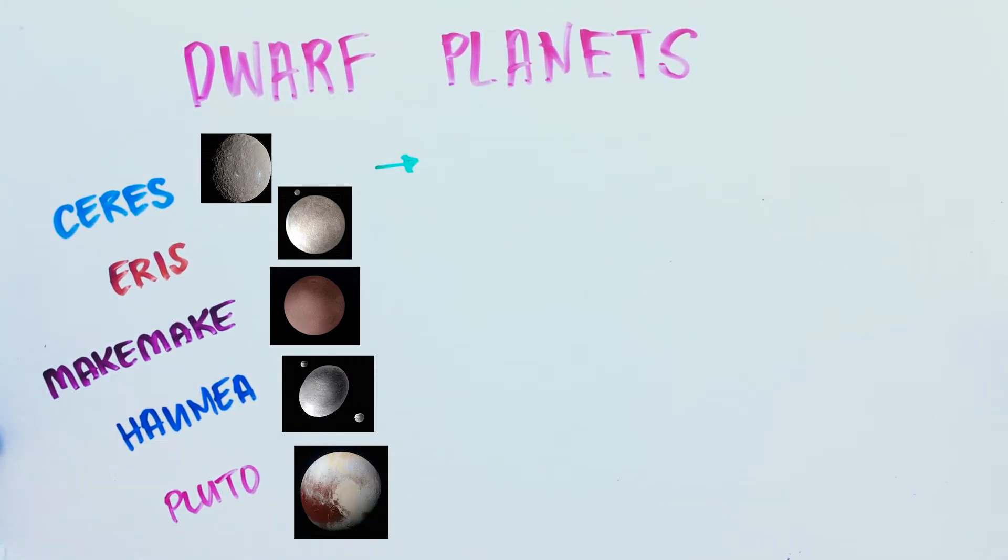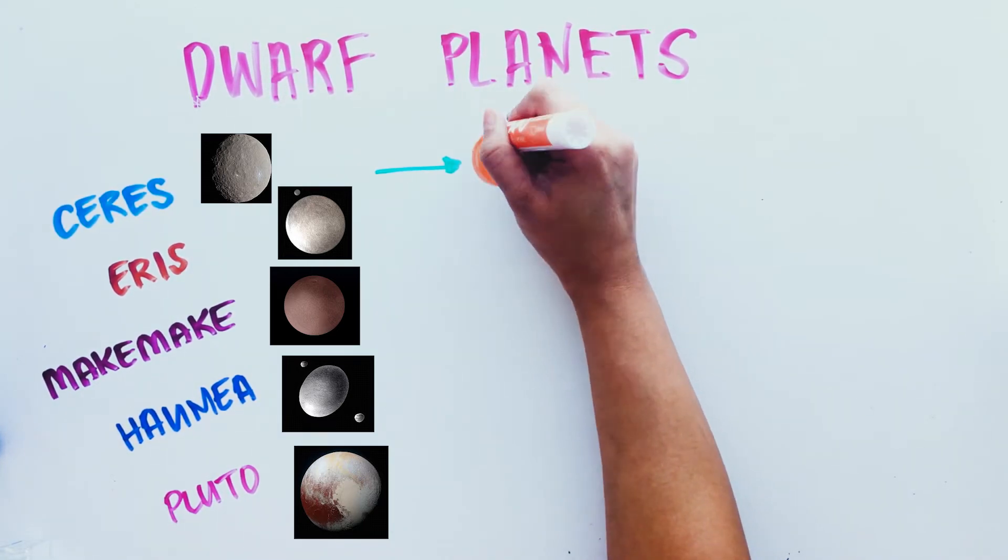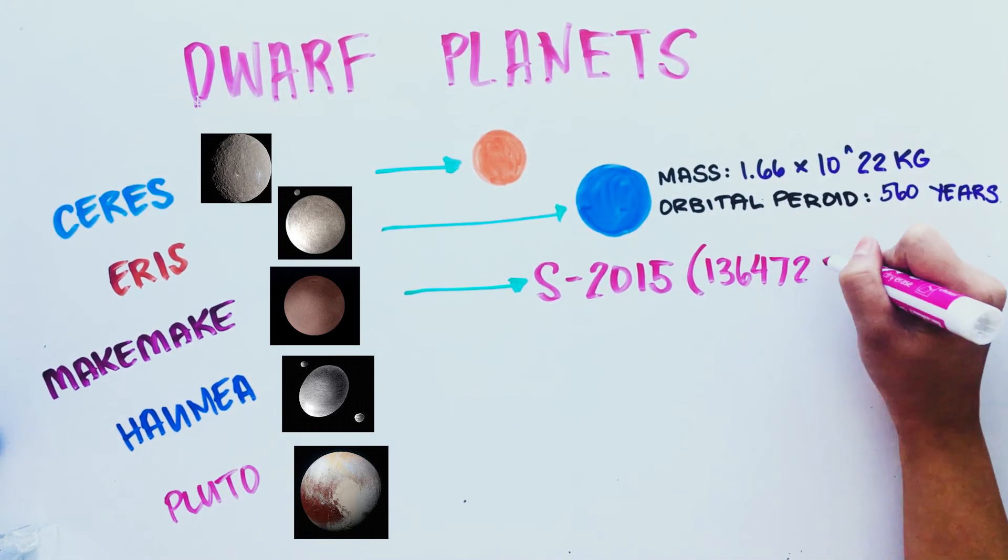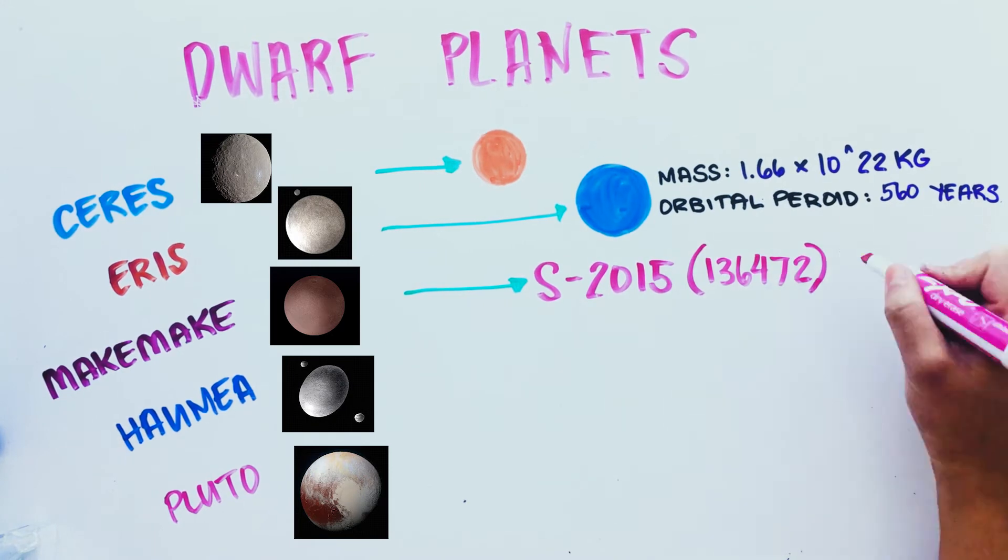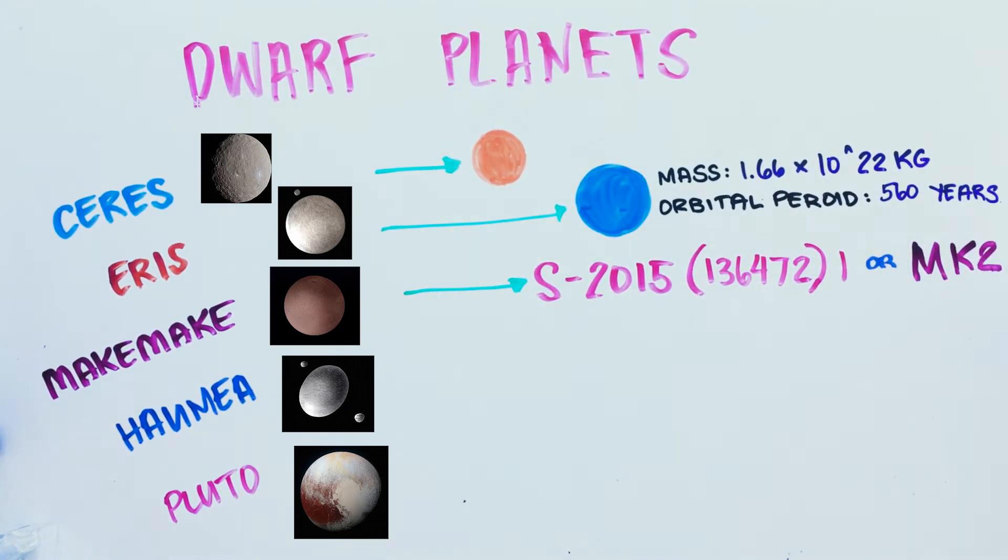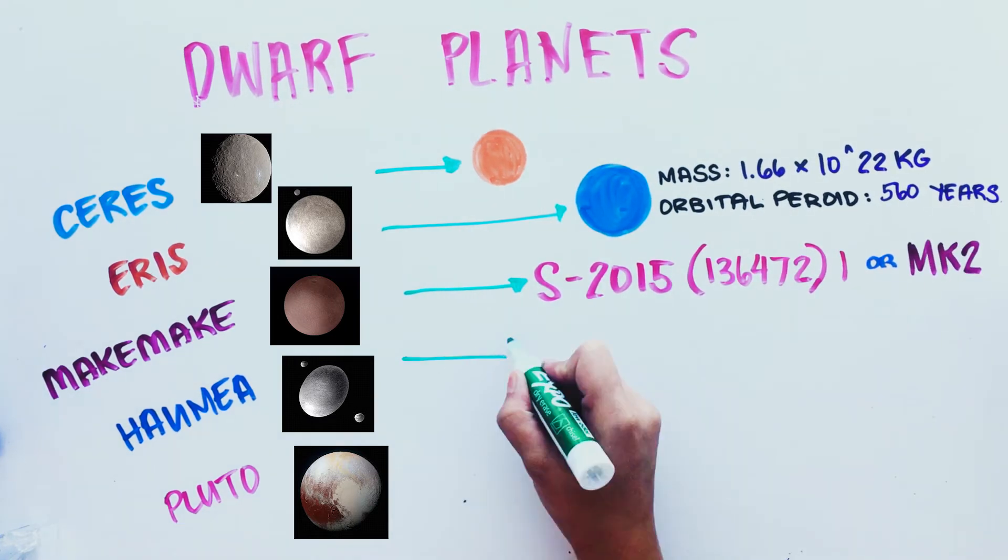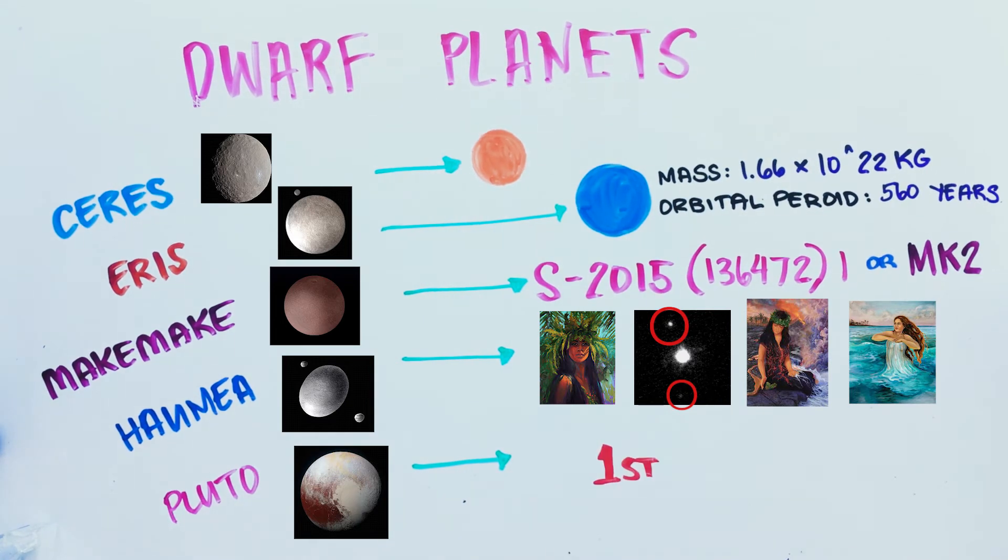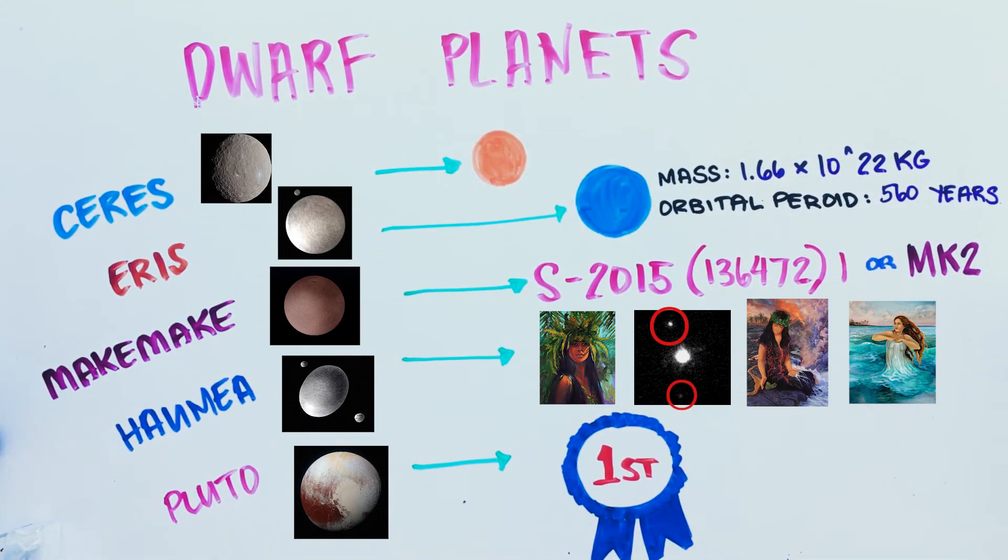Ceres is so far the only dwarf planet in the asteroid belt that is rounded by its own gravity. Eris is the most massive and second largest dwarf planet. It orbits the Sun three times the distance of Pluto. Makemake has a moon, and it's called S-2015-136472-1, or MK2. It's also the largest Kuiper Belt object. Haumea is named after the goddess of childbirth and has two moons, Hiaka and Namaka, also named after Hawaiian goddesses. Pluto is the first Kuiper Belt object to be discovered and is smaller than the United States.